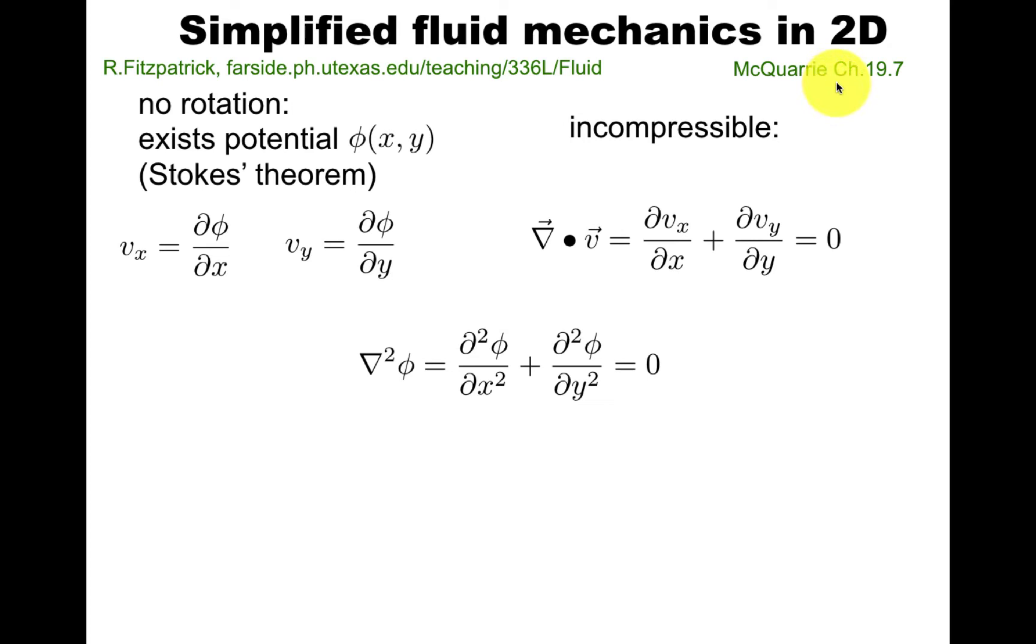We assume no rotation. That means by Stokes' theorem there exists a potential φ of which the velocity field vx and vy in two dimensions is the gradient. We also assume for simplicity incompressible fluid, the divergence is zero, so this combination is zero.